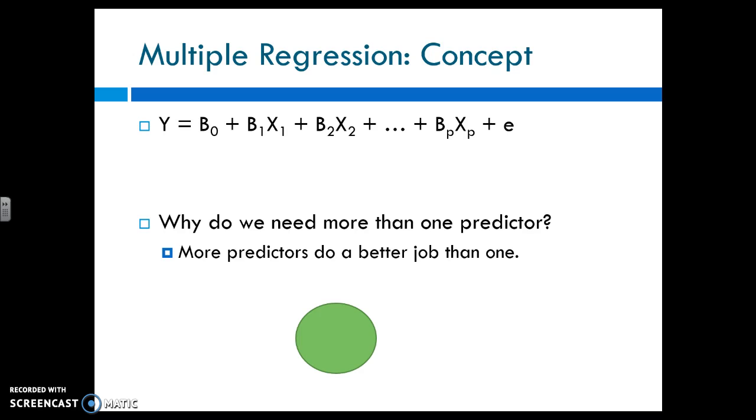All right, multiple regression. So we are now taking beta zero, beta one, and we are adding predictors. So this is predictor two, beta two, predictor three, they'll have beta three, and as many as we want. I had a researcher do up to 50 and it still ran. The interpretation was a nightmare. Good luck.